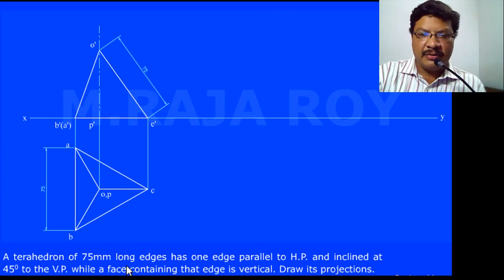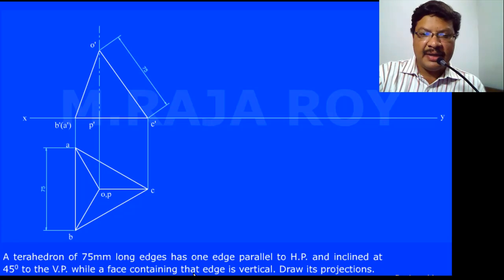A tetrahedron of 75 mm long edges has one of its edges parallel to HP and inclined at 45 degrees to VP, while a face containing that edge is vertical. Draw its projections.